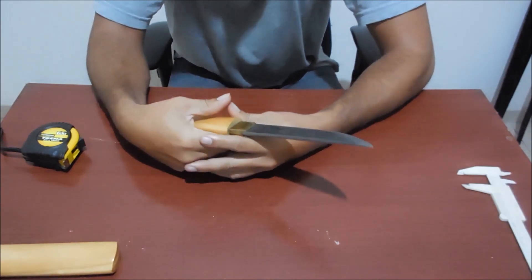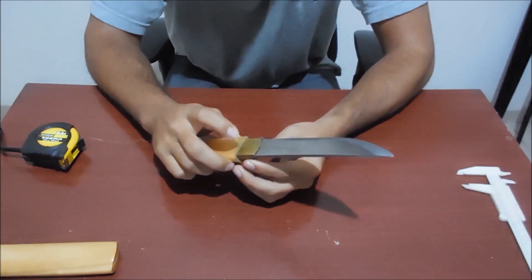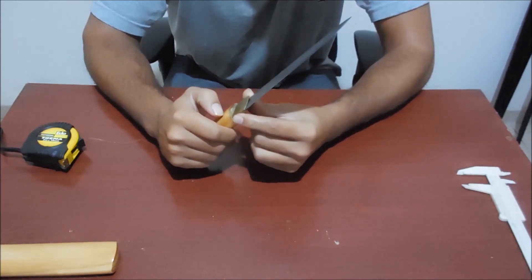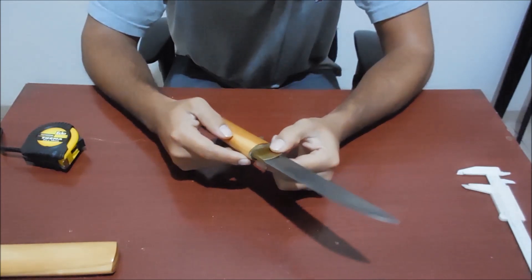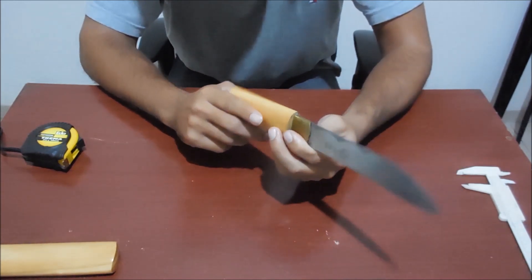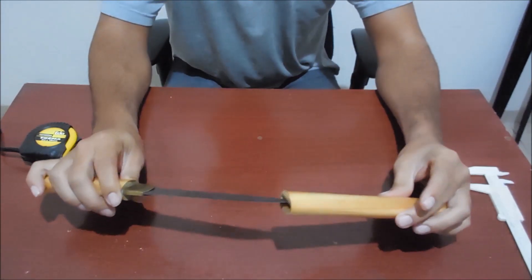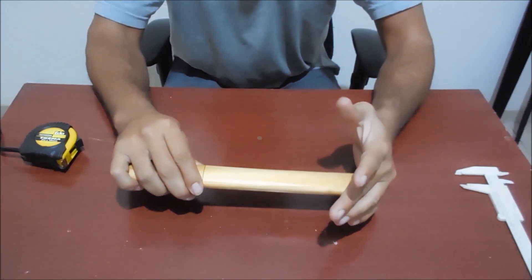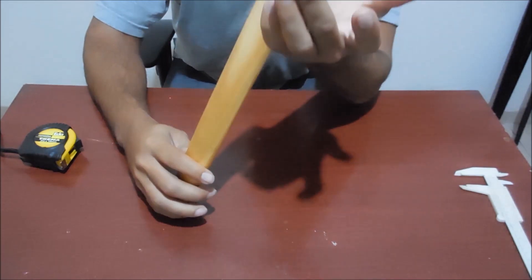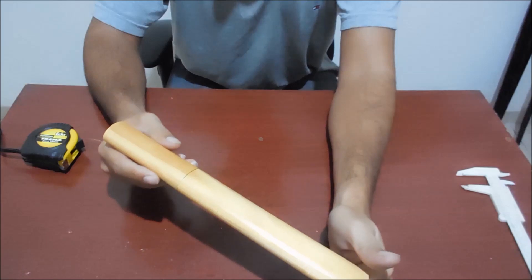Now let's check the blade itself. It has the, I believe it's brass on the Habaki. The handle or the Tsuka is wood. I don't know what kind of wood it is. But it's a very, very nice and beautiful wood. It's not lacquered.